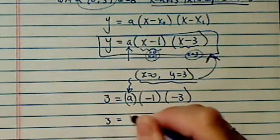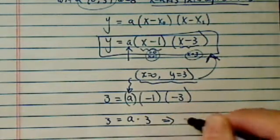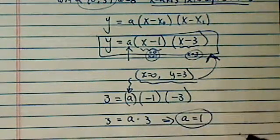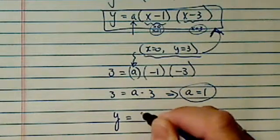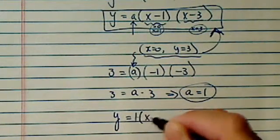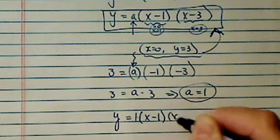So I have 3 is equal to a times 3, which is really simple, giving me a equal to 1. Since a is equal to 1, my parabola equation becomes 1 times (x minus 1)(x minus 3).